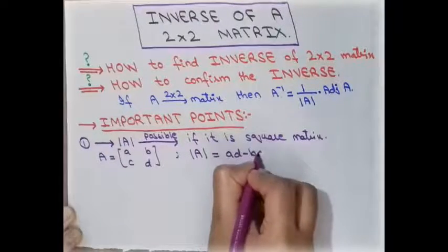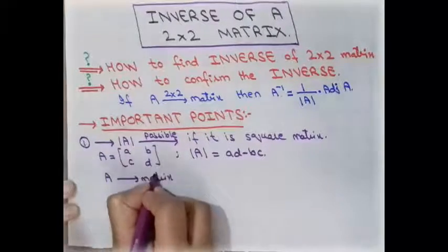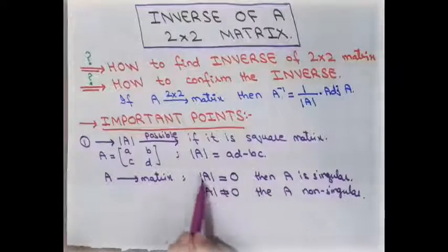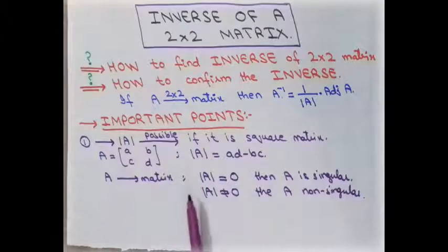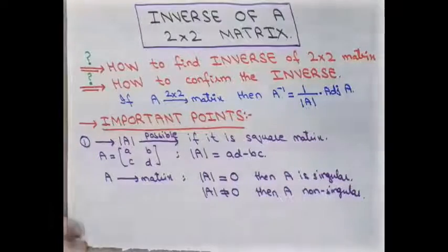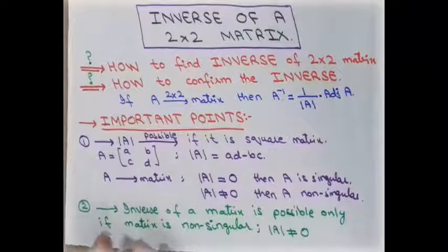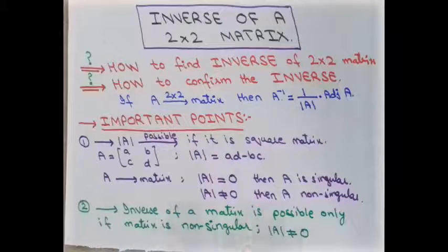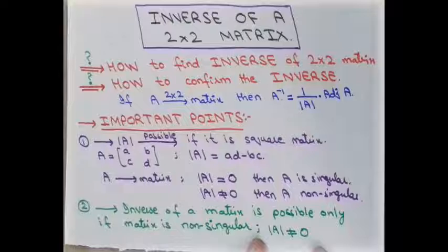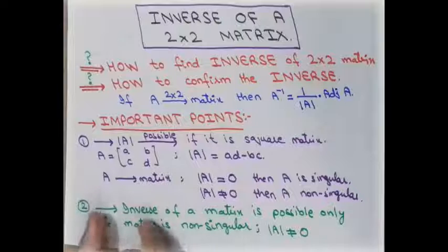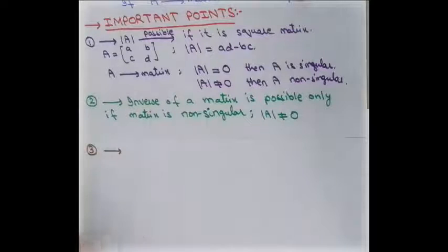If the determinant of A is equal to 0, then matrix A is a singular matrix. If the determinant of A is not equal to 0, then we say the matrix is non-singular. The inverse of the matrix is possible only if the matrix is non-singular — meaning the determinant is not equal to 0. This condition is necessary: the matrix must be non-singular for us to find its inverse.